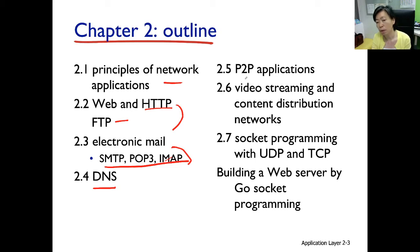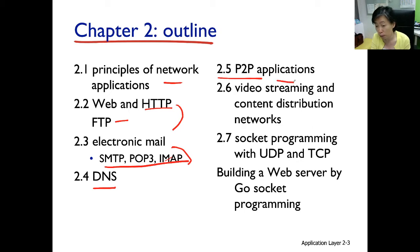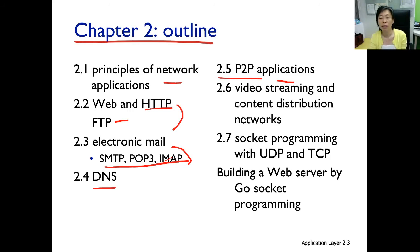DNS sounds like a core service supporting the internet's operation, not exactly an application. In 2.5, you'll see how P2P networks and P2P services can be designed, and we'll see a couple of examples. One of them is BitTorrent — the major P2P service that came before Bitcoin. We're going to see what's behind BitTorrent's operation.